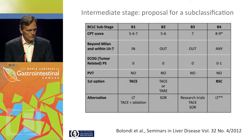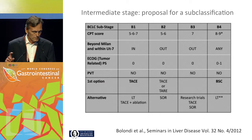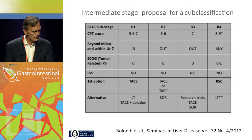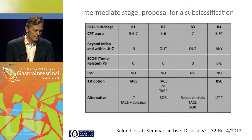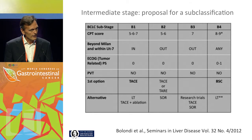There have been initiatives to propose subclassifications for the BCLCB stage. This one comes from a European group led by Luigi Boulondi from Bologna, which suggests a subdivision of B1 to B4 for the BCLCB stage. The difference is liver function with a Child-Pugh score, as well as the up-to-7 size criteria — meaning the number of tumors plus the diameter of the largest tumor — so in and outside the up-to-7 rule, as well as Child-Pugh score.